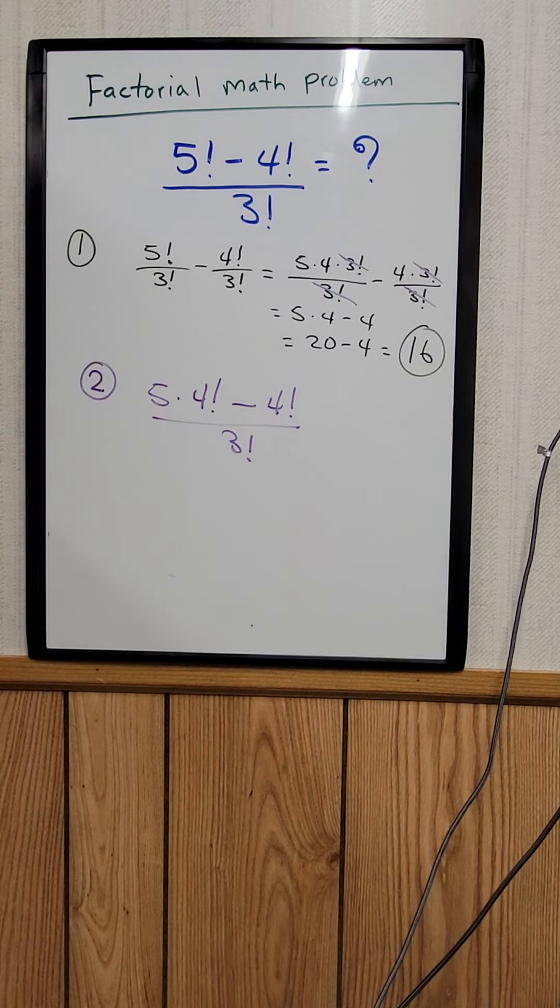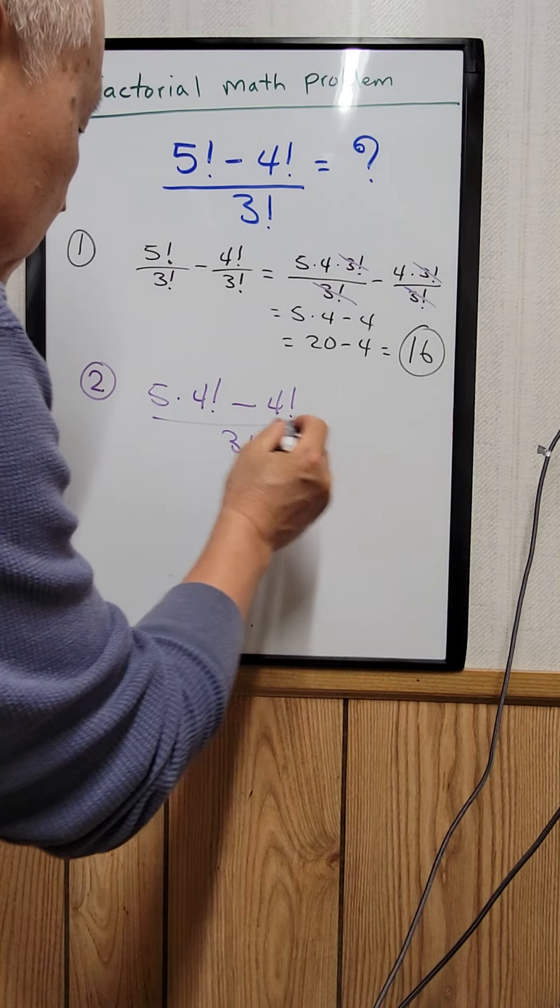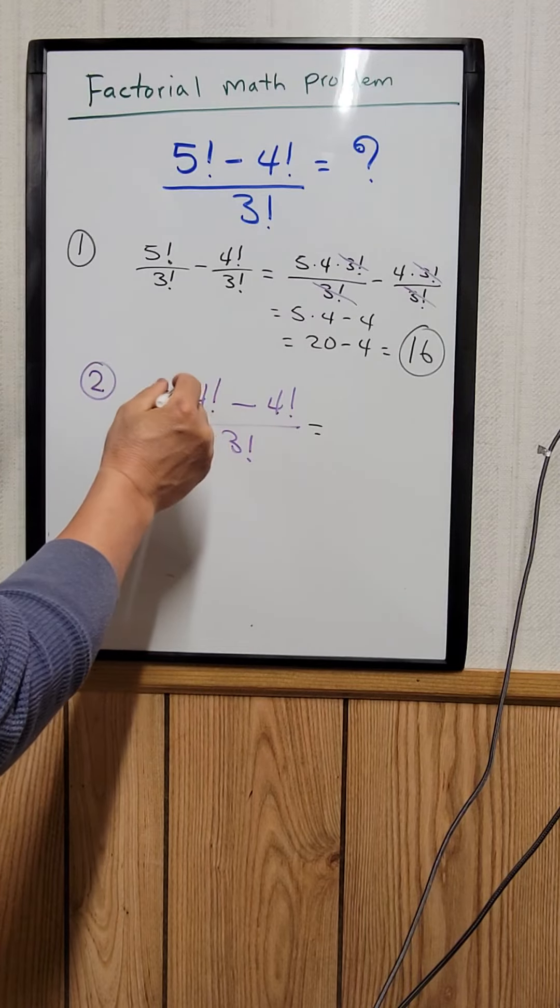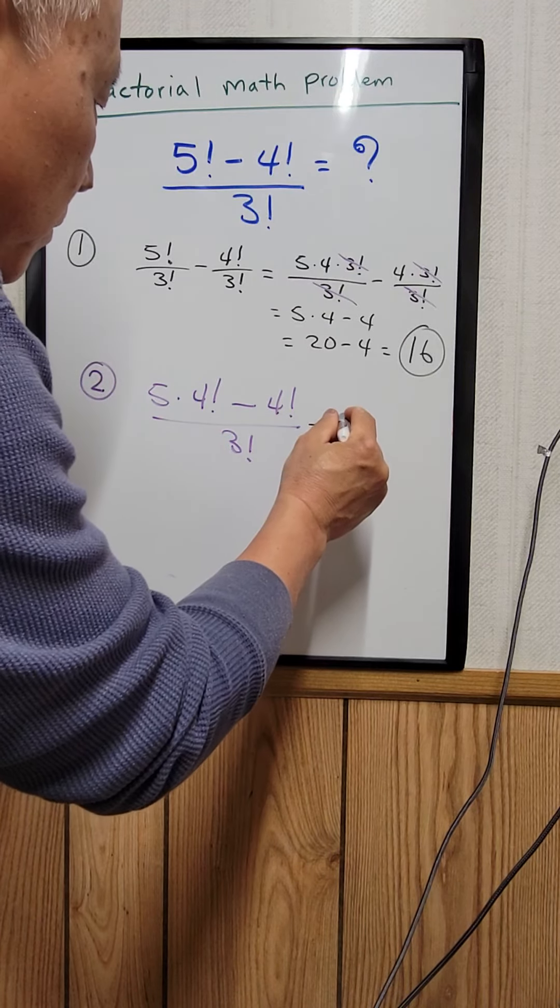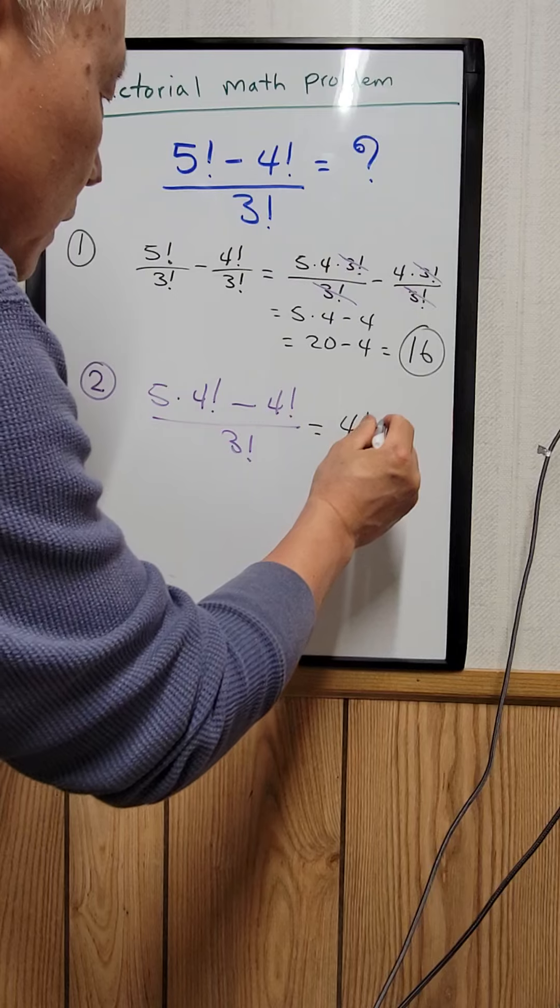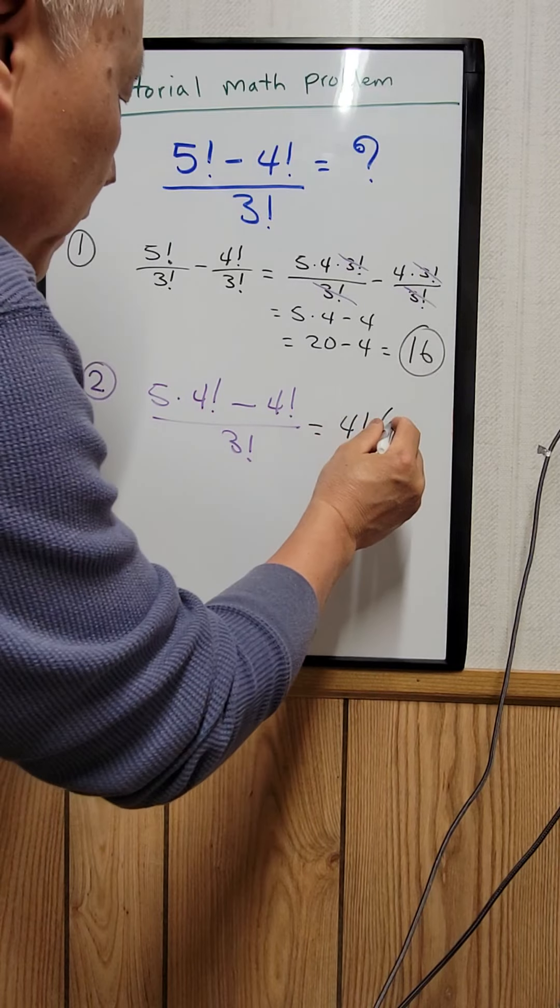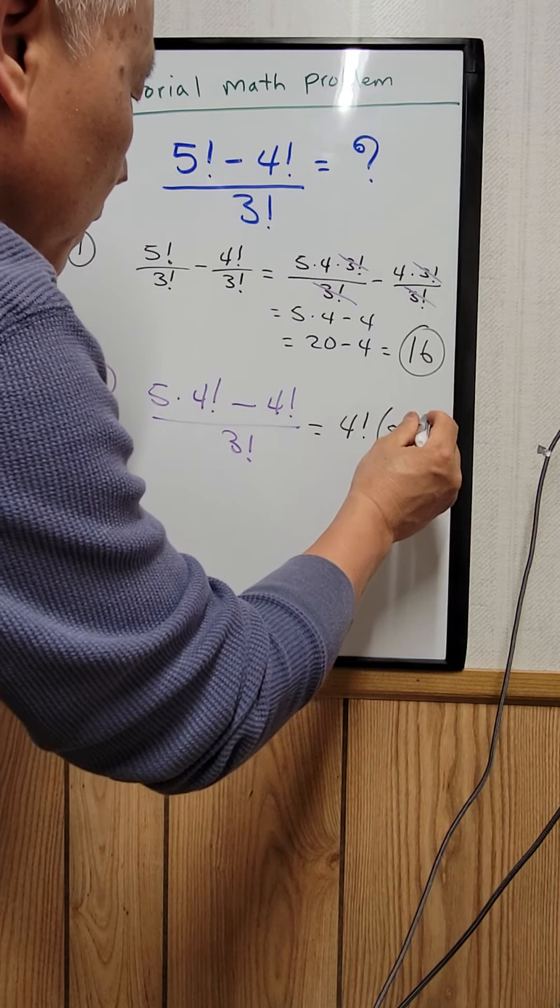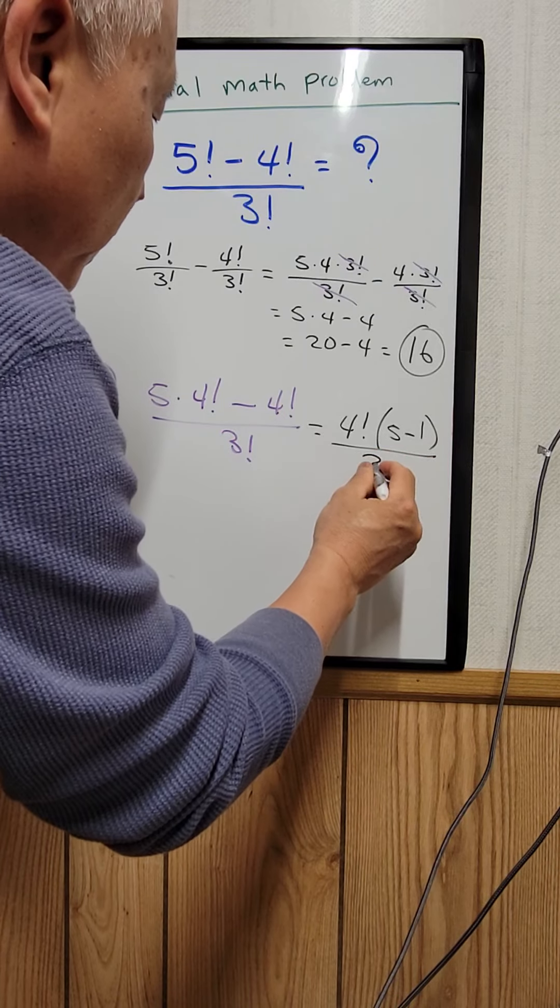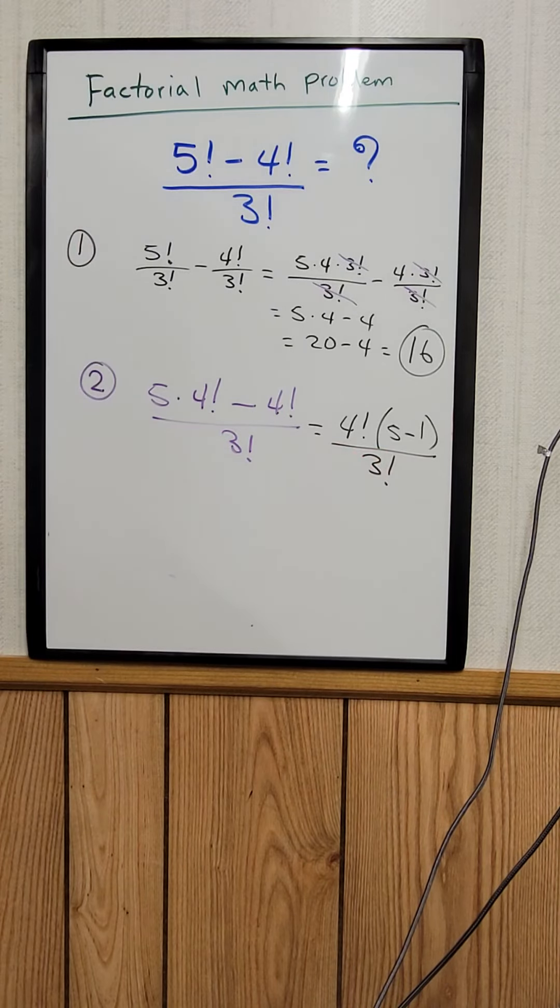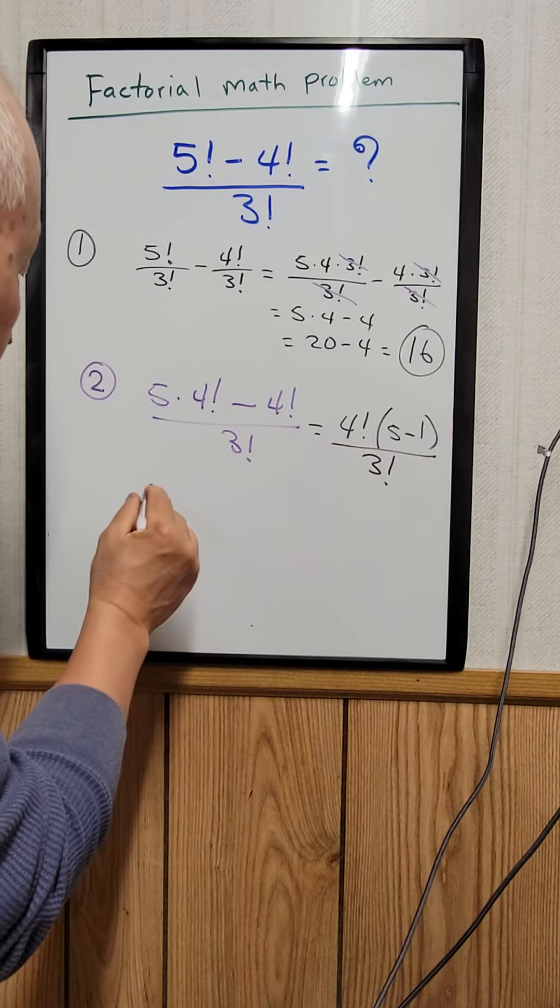You can factor out the 4 factorial, so it becomes 4 factorial times 5 minus 1, divided by 3 factorial.